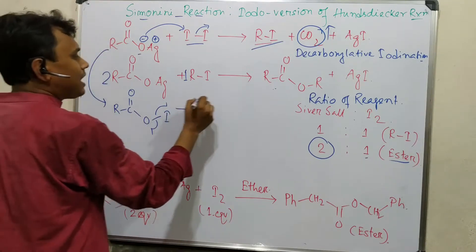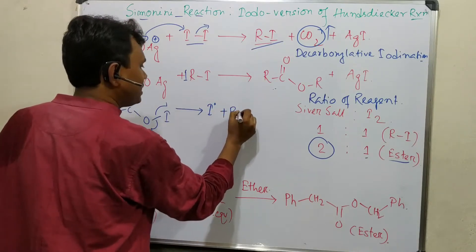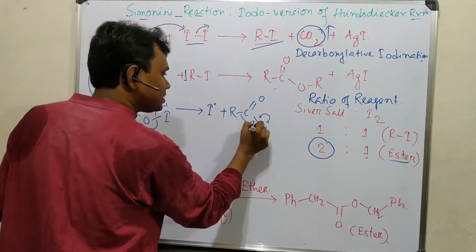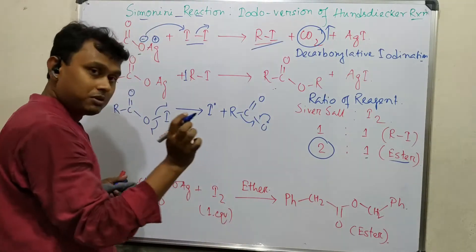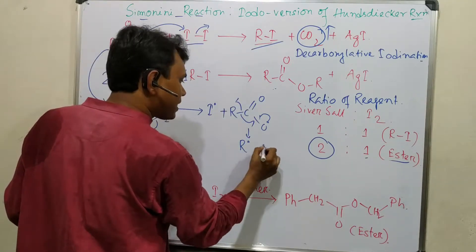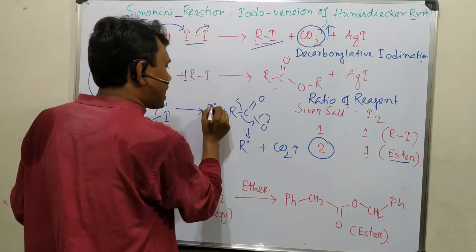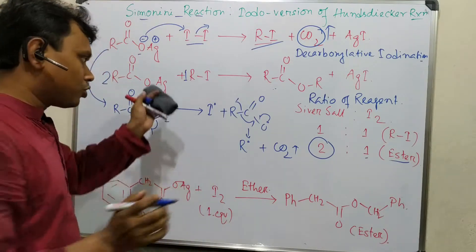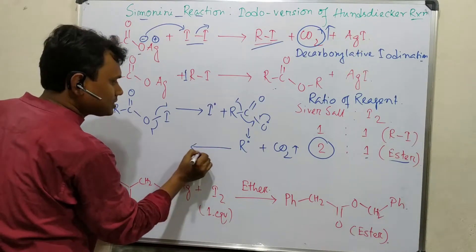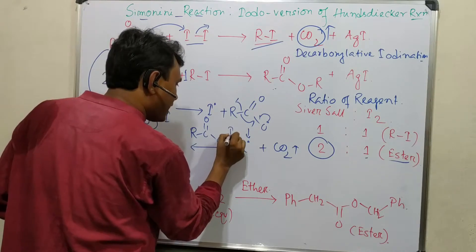This acyl iodide undergoes homolytic cleavage to produce iodine radical and acyl radical, exactly similar to Hunsdicker reaction for bromine. Then it gives R dot plus carbon dioxide through one electron movement. This is the carbon dioxide elimination stage. This R dot and I dot can combine to form R-I, or a chain reaction happens where R dot reacts further with R-CO-O-I.